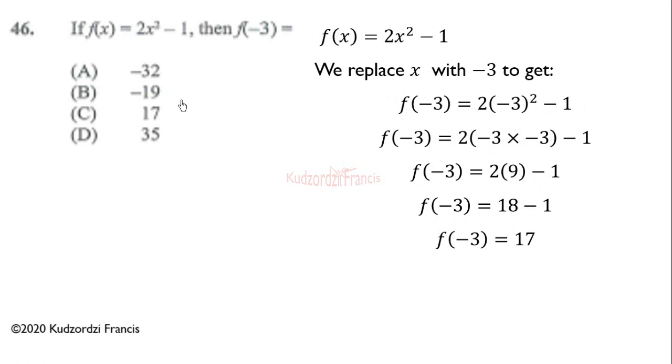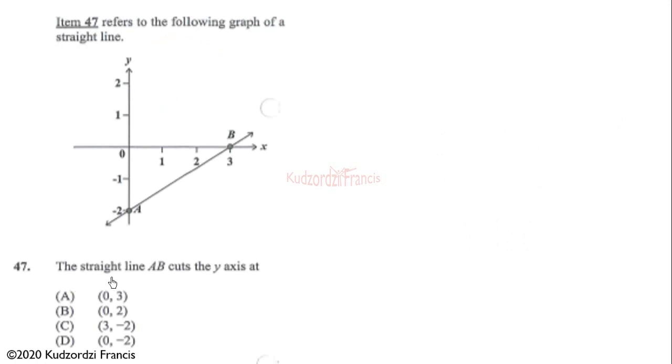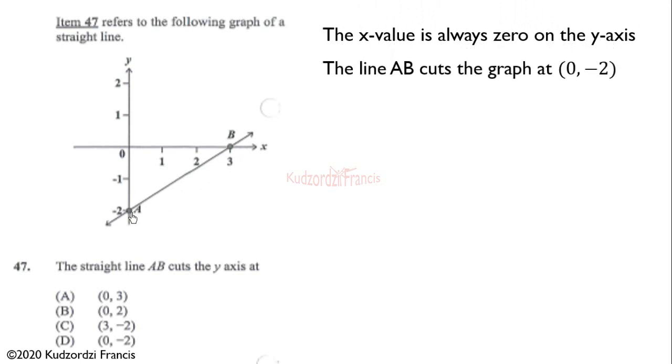Question 47 refers to the graph of a straight line. Line AB cuts the y-axis — the y-axis is the vertical line — at a specific point. The coordinate of that point is (0, −2). Note that the value of x on the y-axis is always 0, so this is the correct answer.